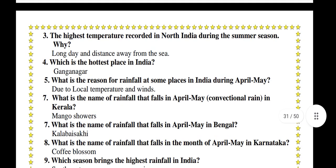The highest temperature is recorded in North India during the summer season. Why? Long days and distance away from the sea. Which is the hottest place in India? Ganganagar. What is the reason for rainfall at some places in India during April to May? Due to local temperature and winds.